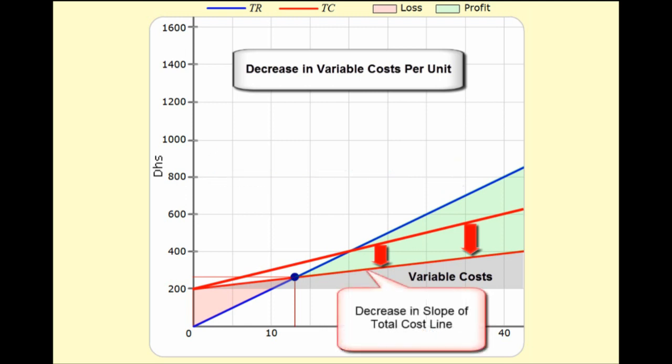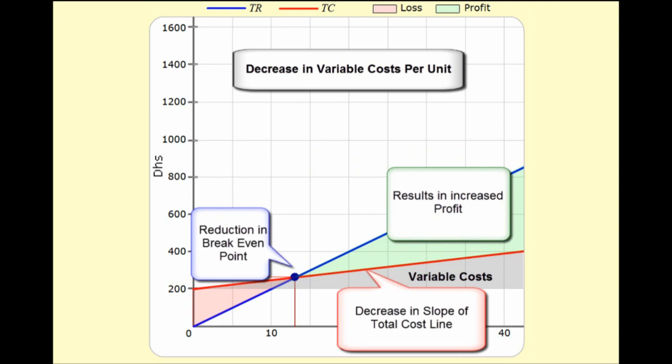The slope of the variable cost line decreases if we decrease the variable cost and so the break-even point is reduced, and our fixed costs are recovered sooner and profits are increased.